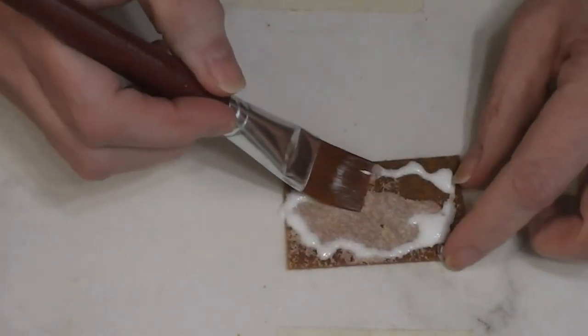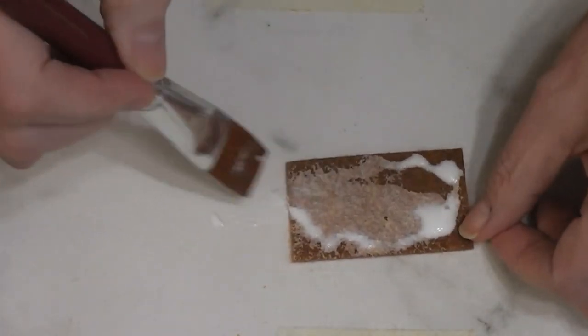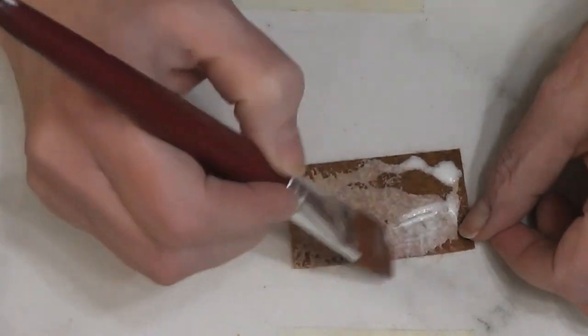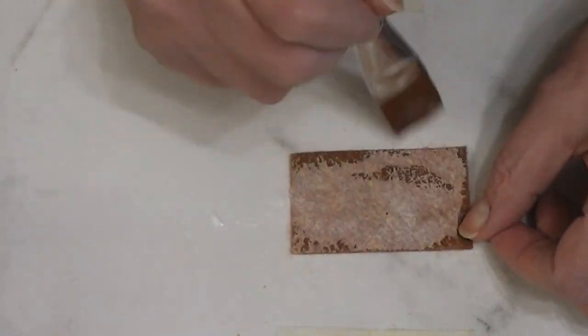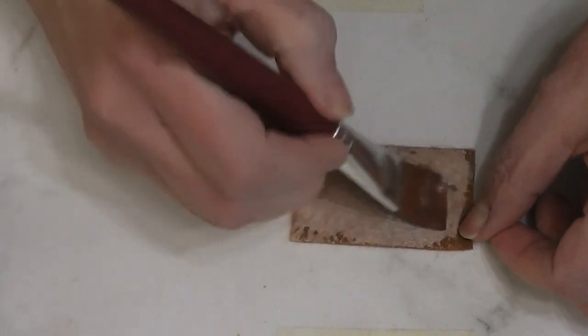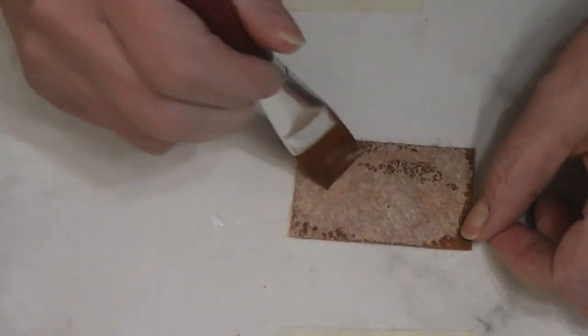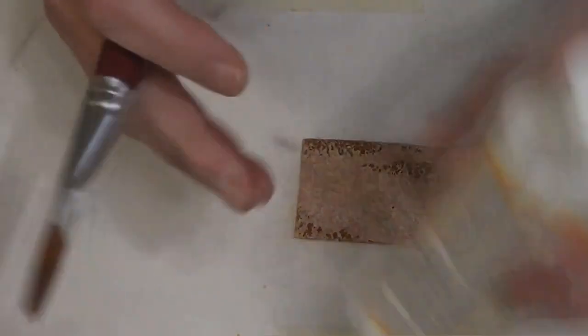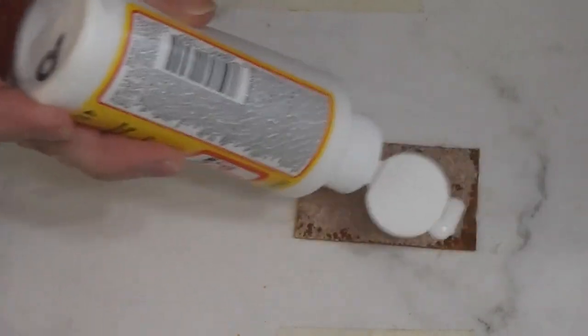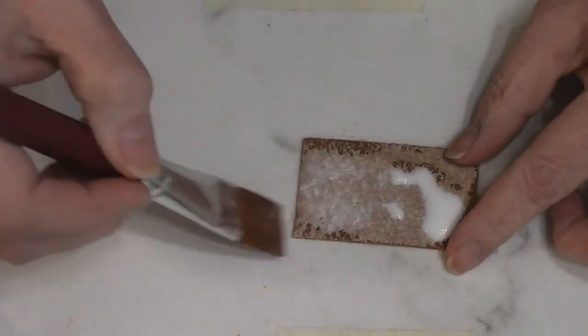It's going to stiffen the fabric up a little bit and make it lay a lot nicer when it's done. It's going to seal the felt so that our paint goes on a lot nicer, a lot more evenly and it just makes for a lot nicer finish, a lot easier.